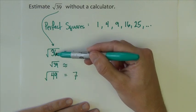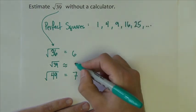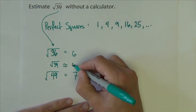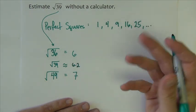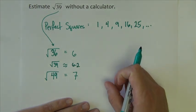Now, 39 is closer to 36, so I would estimate it as a decimal closer to 6, so I would probably guess something like 6.2, somewhere in that neighborhood. But you could check on a calculator to see exactly what it is.